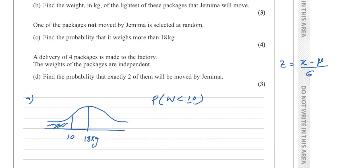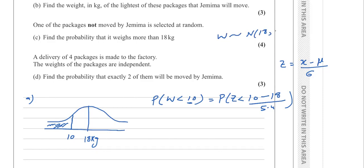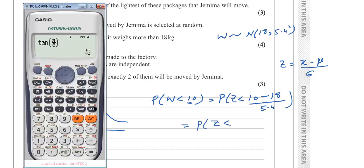Our x in this case is 10, so we write P(Z < (10 − 18) / 5.4). This is from our normal distribution with mean 18 and standard deviation 5.4. Calculating: (10 − 18) / 5.4 = −1.481, so we have P(Z < −1.481).